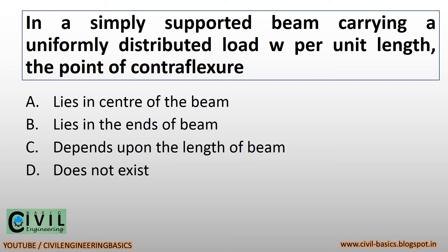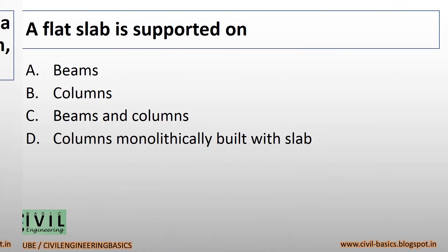In a simply supported beam carrying a uniformly distributed load W per unit length, the point of contraflexure lies in the center of the beam. A flat slab is supported on columns.